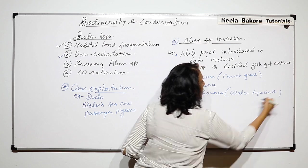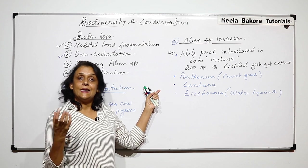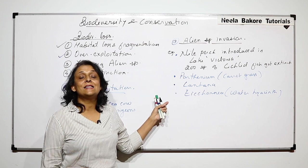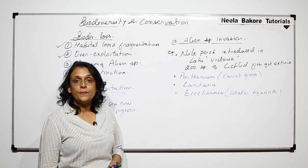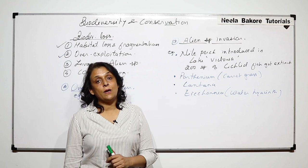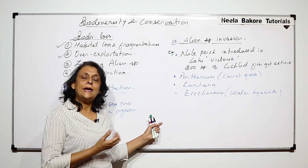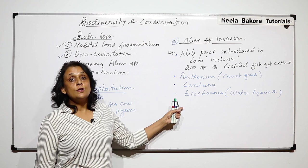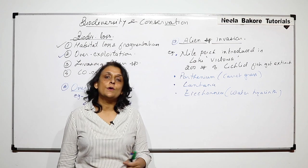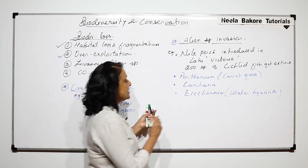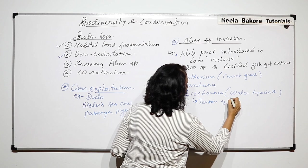Parthenium is an alien species that entered accidentally, and Eichhornia was brought because of its ornamental value. It was introduced into the lakes in Bengal and multiplied in such numbers that it would cover the entire lake in a few days. Because it was growing in the lakes, it would extract all the oxygen from the water and the other aquatic forms were getting affected. That is why this Eichhornia is commonly known as terror of Bengal.